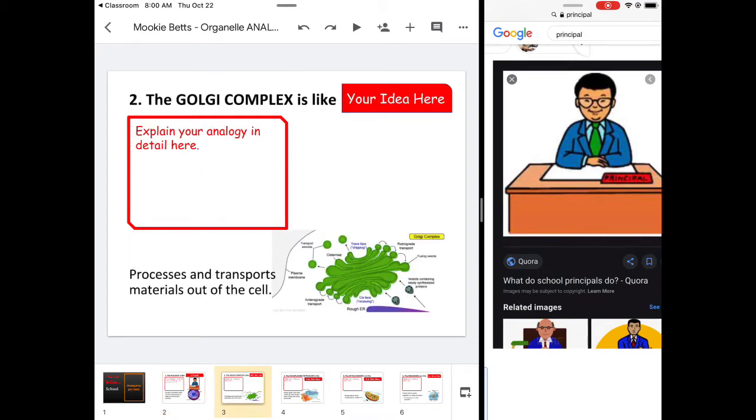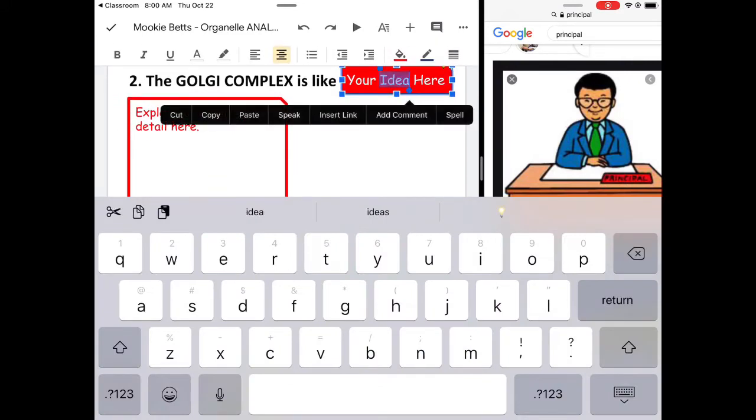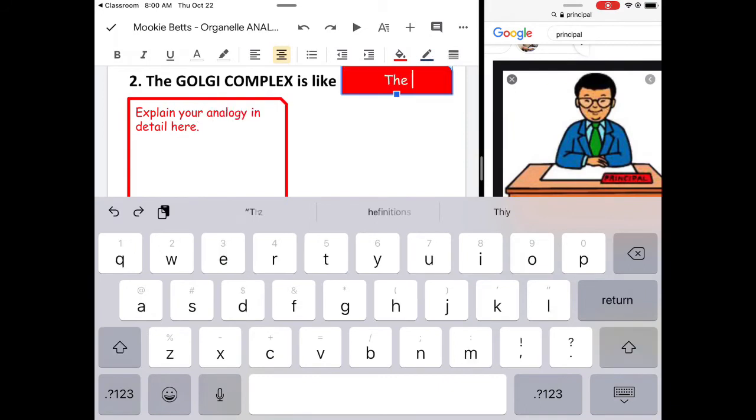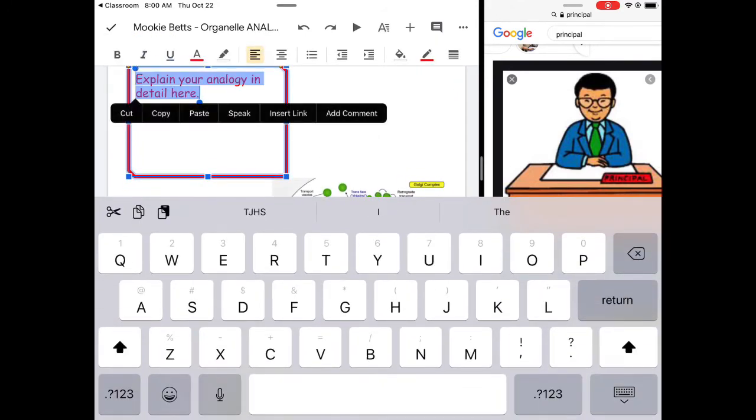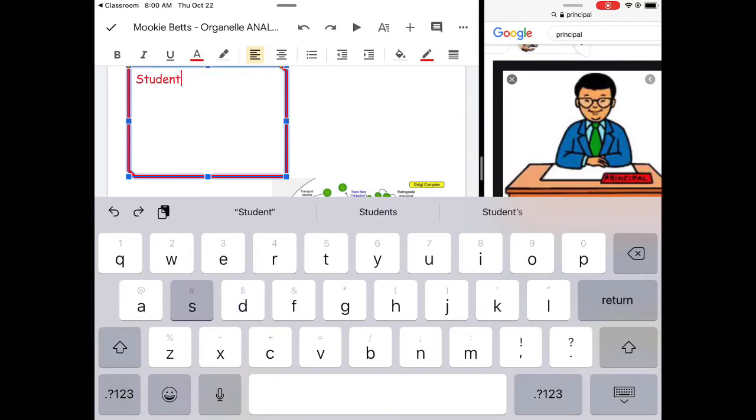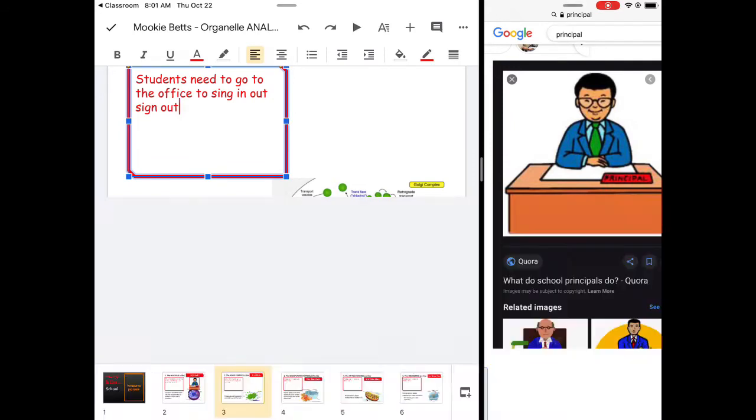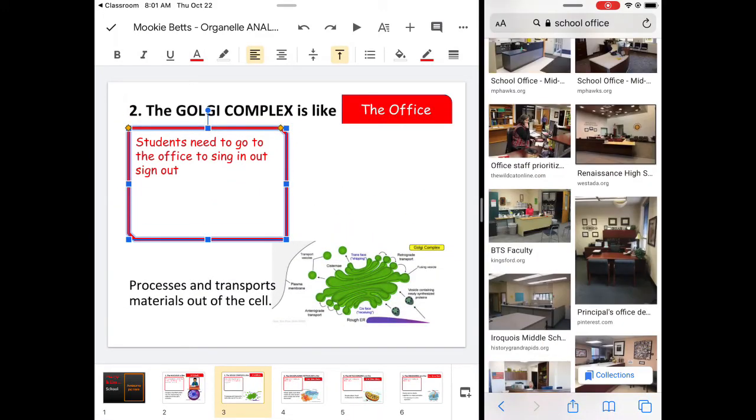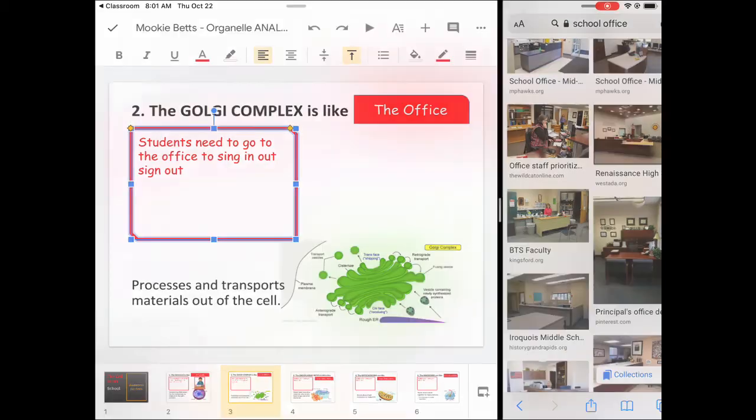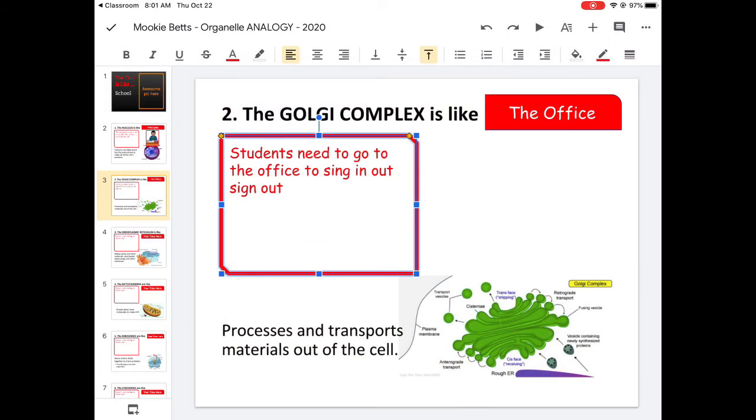For the next slide, I would also compare. So the Golgi Complex moves things in and out of the cell. So I might say, that's the office. Students need to go to the office to sign in or sign out. And then I would search for a picture and see what I could get. And so I would pick a picture. Or I could walk down and take a picture of the school office. And so each slide needs a picture and a well-described fact.